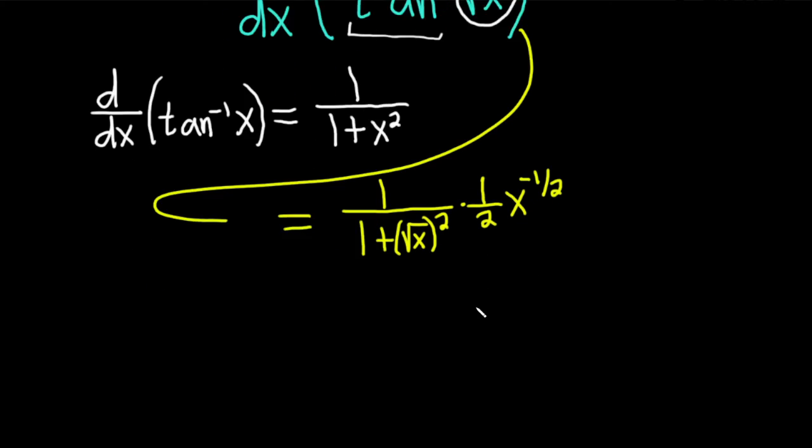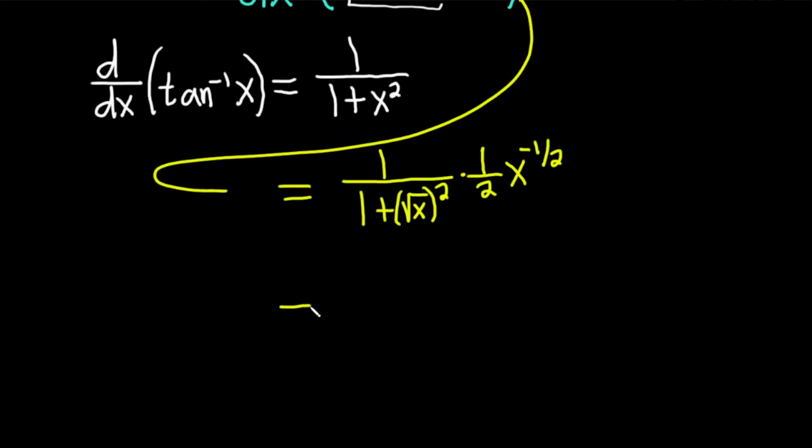Now we just have to clean this up and make it look a little better. This is 1 over... When you square the square root of x, it just becomes x. This is 1 plus x.